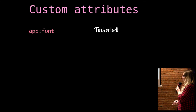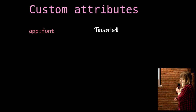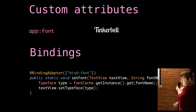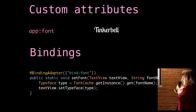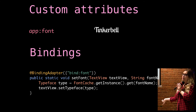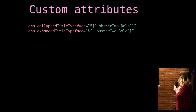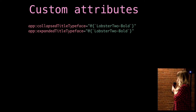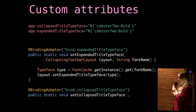And as for custom attributes, you can make ones that do not exist as setters — you can just make up whatever you want. A popular example is typeface. So Tinkerbell, I've written her name in a custom font. Here's a binding adapter that lets me set the typeface in XML. I write app:font, take in a text view and a font name, get it from my cache — because you should be using a cache for your typefaces — and just set it on the text view. Done. You can also do the same thing for collapse title typeface and expanded title typeface on the collapsing toolbar layout. This font is called Lobster.